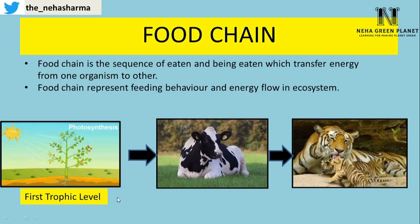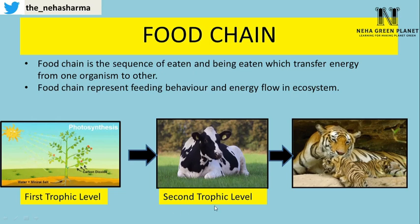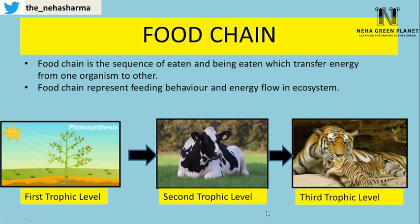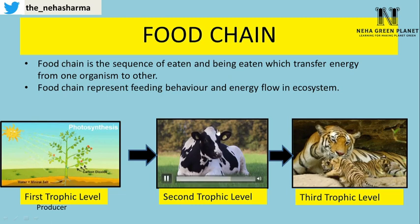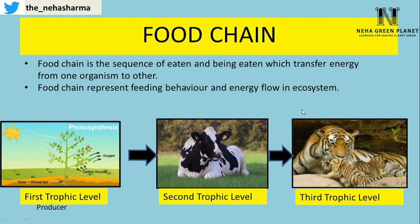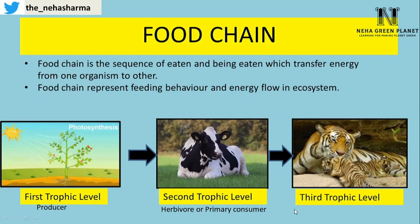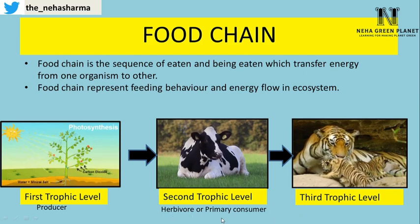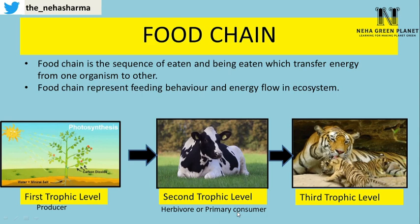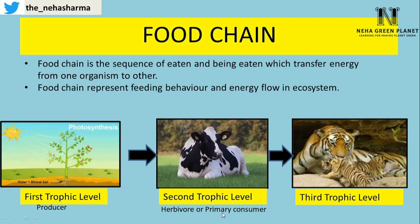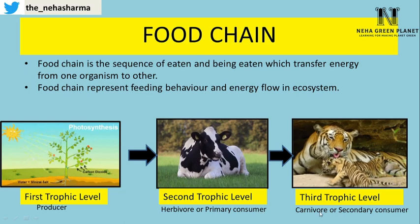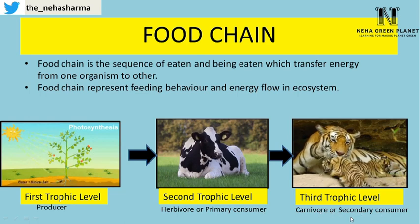Plants are at the first trophic level because energy exchange takes place for the first time at the level of plants. The cow is at the second trophic level and the tiger is at the third trophic level. Plants are the producer because they can synthesize food on their own. Cow and tiger are consumers. The cow is a herbivore or primary consumer — the consumer which appears in the food chain for the first time. Tiger is the carnivore or secondary consumer because it appears in the food chain at the second level.